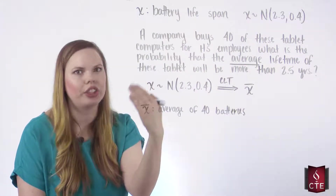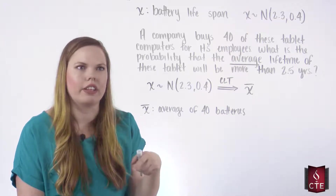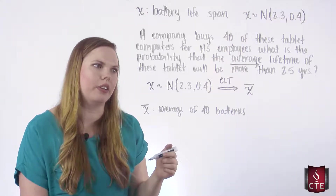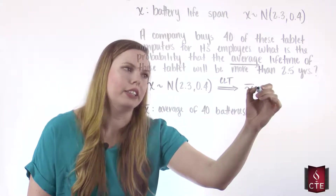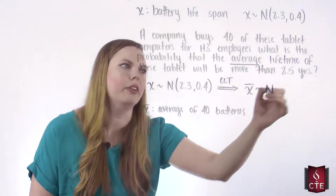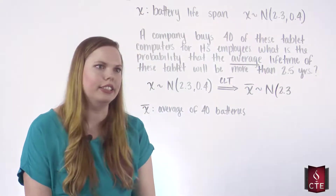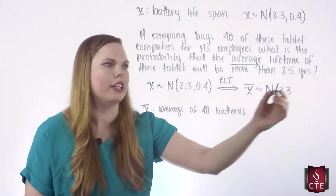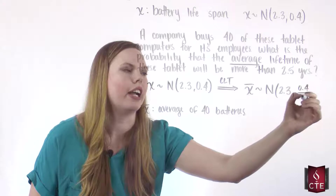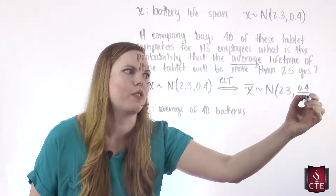We've changed our variable. It was the battery lifespan of one device; now it's the average of 40 of these. But luckily, by the central limit theorem, X-bar is still normally distributed — with the same mean of 2.3 and a standard deviation of 0.4 divided by the square root of N, where N is 40.